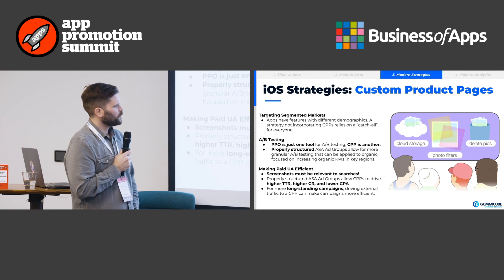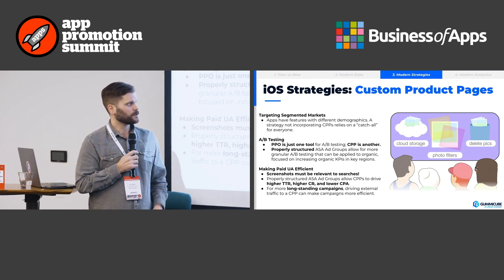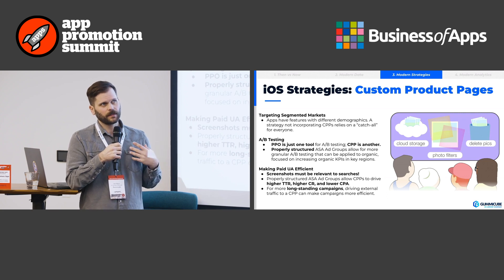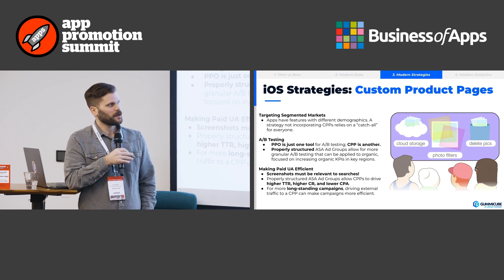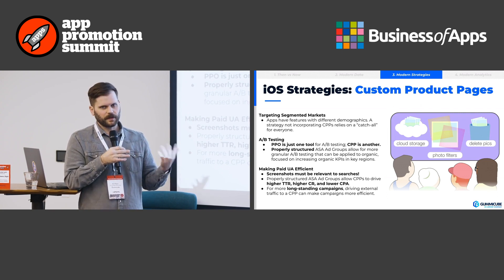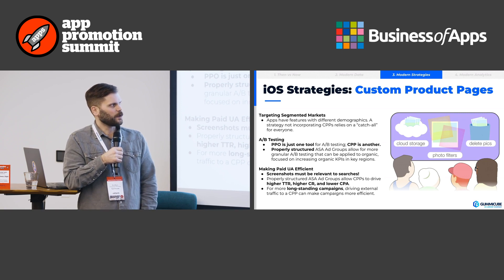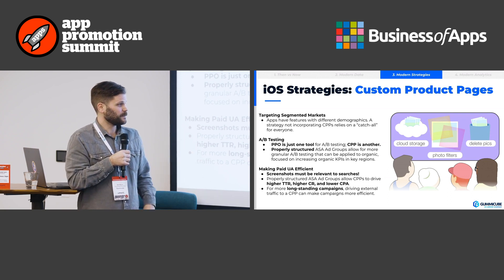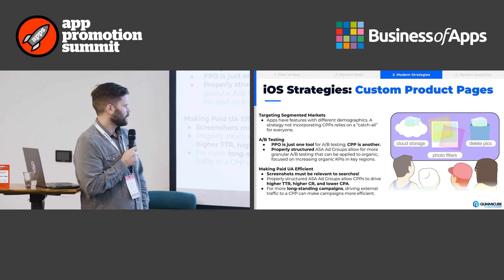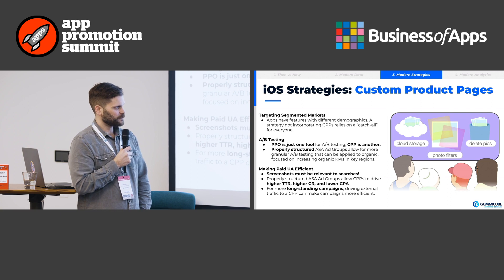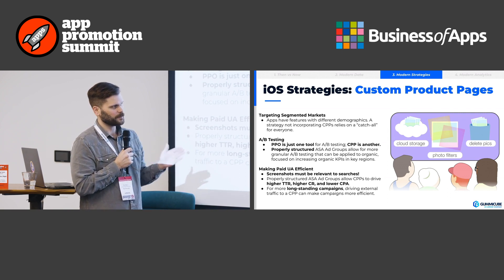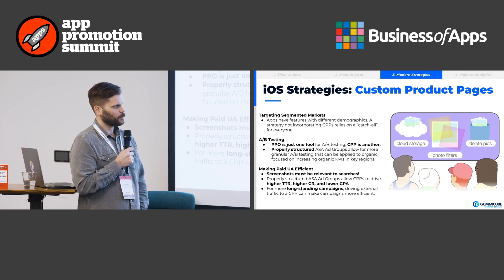Using CPPs for A/B testing — PPO is just one tool for A/B testing. But you can take the keywords you're ranked organically well for as a reasonable proxy for your organics — your brand name, top-ranked feature-based keywords — put that into an ad group, and run an A/B test on compositions, colors, things like that. That way, before you run PPO, you can get a sense of how creatives perform. Screenshots have to be relevant to searches. Apps have features, features have demographics. Making funnels for all of these users for all of the things you do — it's no longer a one-size-fits-all approach.